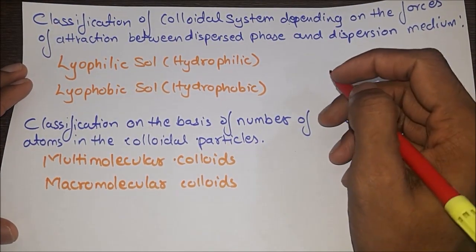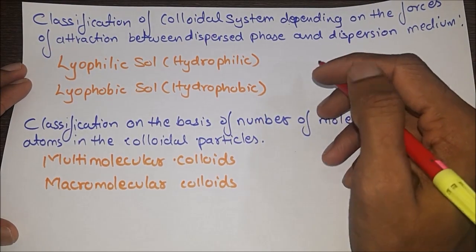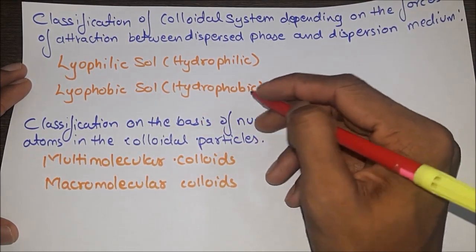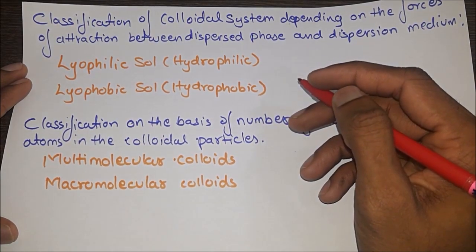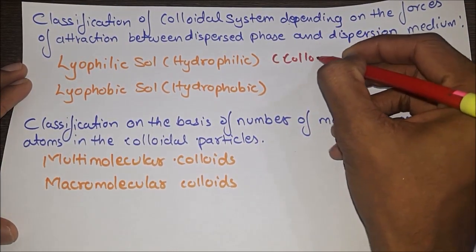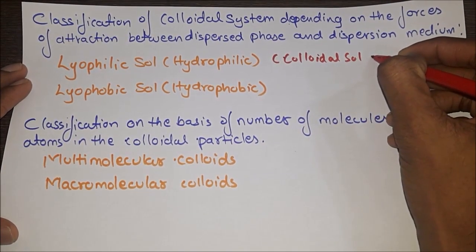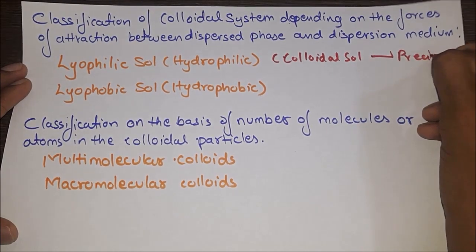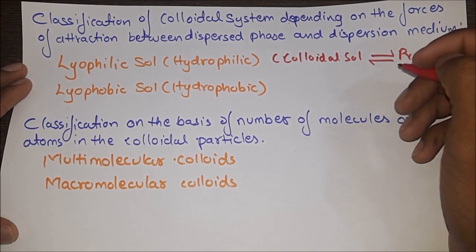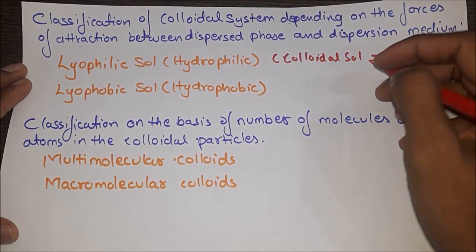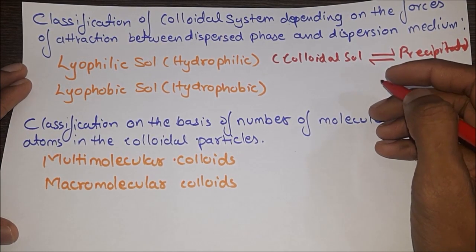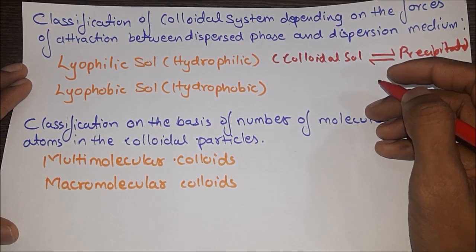Classification of colloidal systems based on forces of attraction between dispersed phase and dispersion medium: there are two types — lyophilic solution (hydrophilic) and lyophobic solution (hydrophobic). Lyophilic solution: the dispersed phase and dispersion medium attract each other. It is reversible — the colloidal solution can be reconstituted after precipitation. Viscosity is higher than that of the dispersion medium (water); surface tension is lower than that of water. Particles cannot be easily detected under ultra microscope. Substances with higher molecular weight form lyophilic solutions. Example: protein and starch solutions.